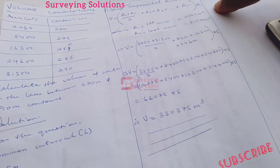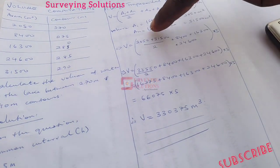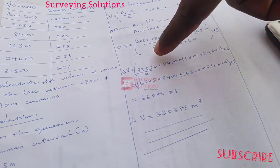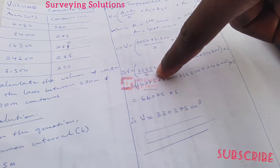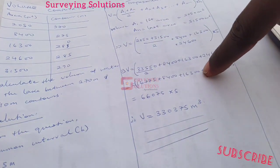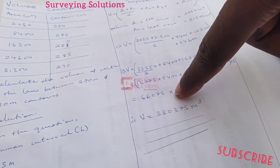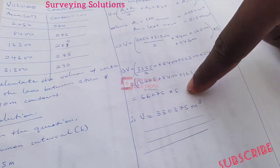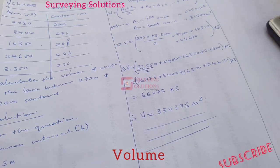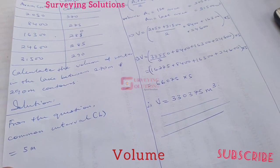So by the time you do your simplification, 2050 plus 31,500 should be able to give you 33,550 divided by 2 plus the other areas multiplied by 4. When you simplify further, you have something like this. So the sum of everything is 66,075. Now that 66,075 multiplied by 5 will now give you the area of the water in the lake, the area of the water in the lake as it was asked to determine.